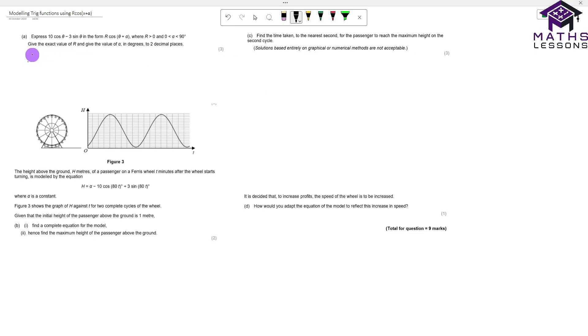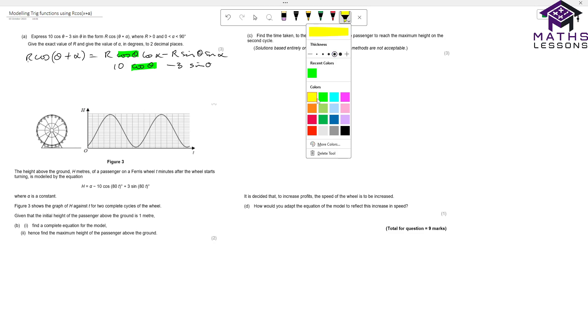The first thing to realize is we're going to be expanding r·cos(θ + α). When we expand that we get r·cos(θ)cos(α) minus r·sin(θ)sin(α). If we compare that to the expression we got, where we got 10cos(θ) and minus 3sin(θ), we can see we've got the cos bit here which matches over here, and the sine bit here which matches with here.